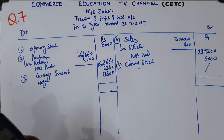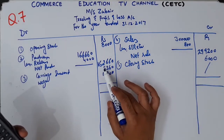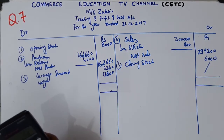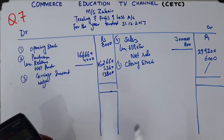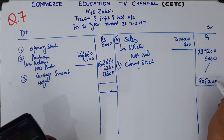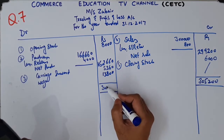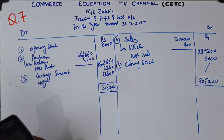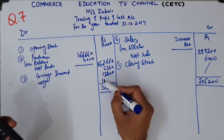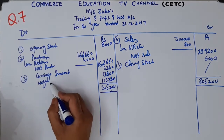Now we total both sides. The total of this side is 299,200 plus 6,000 — coming to 305,200. From this we minus: net purchases 162,660, carriage inward 5,360. The answer we get is 115,380 — this is your gross profit.